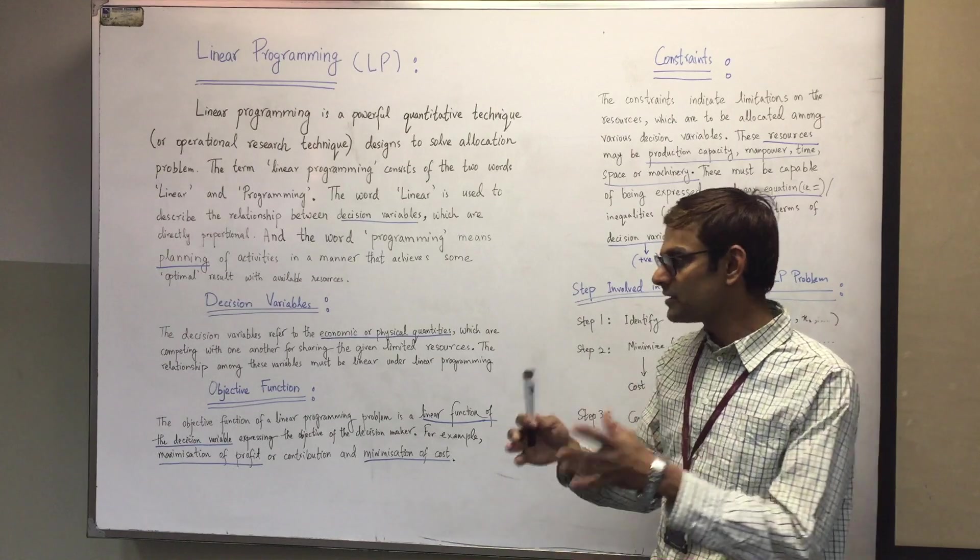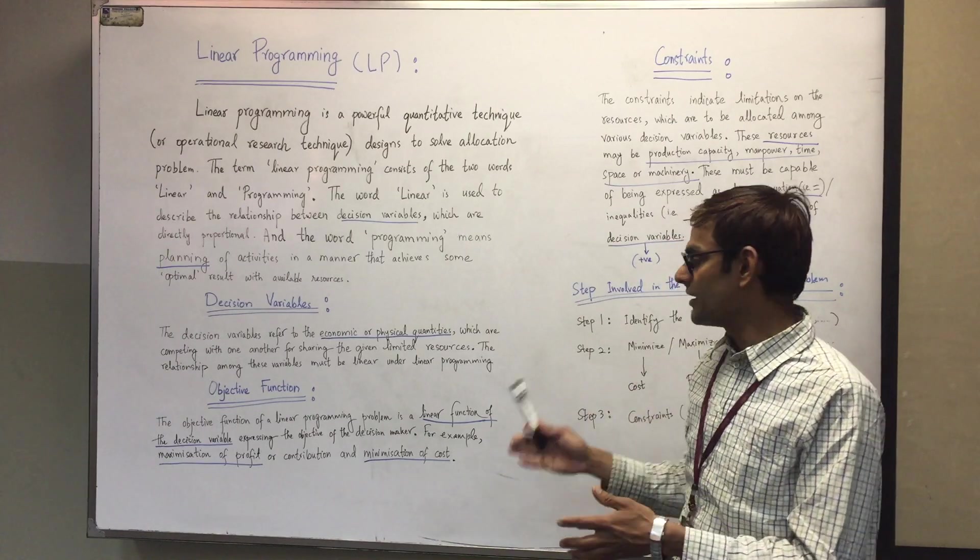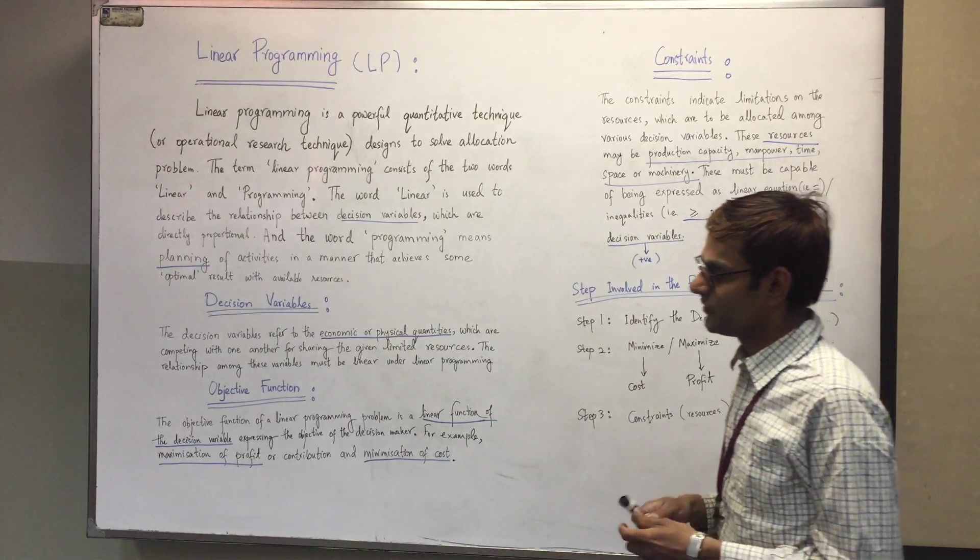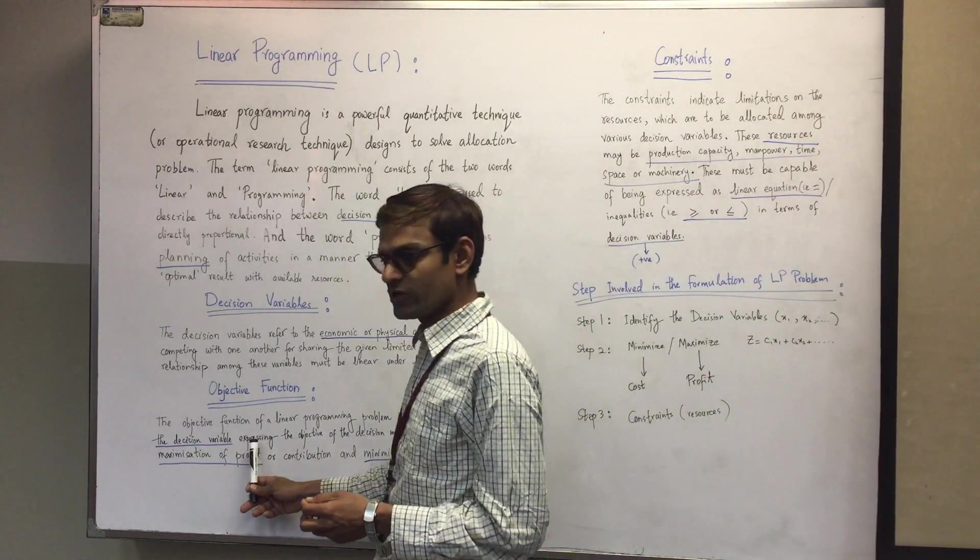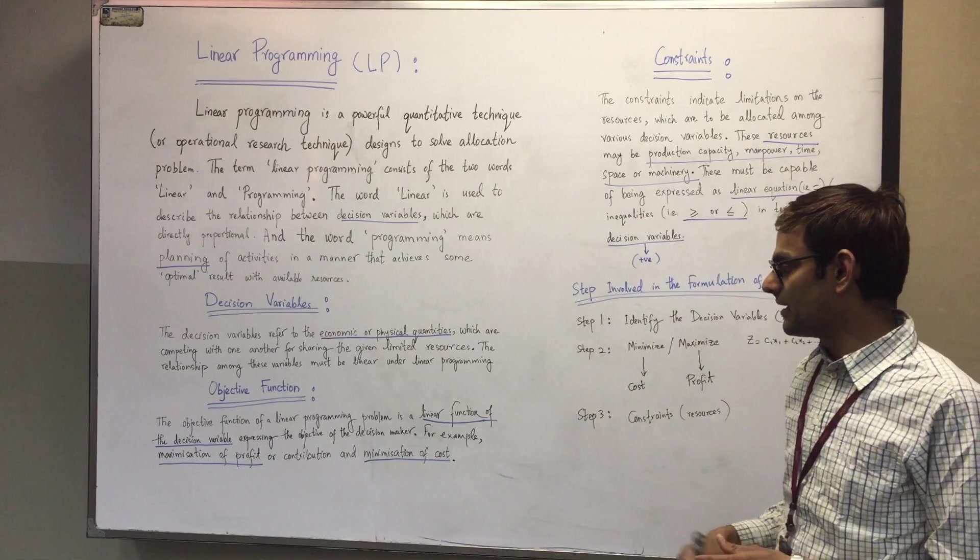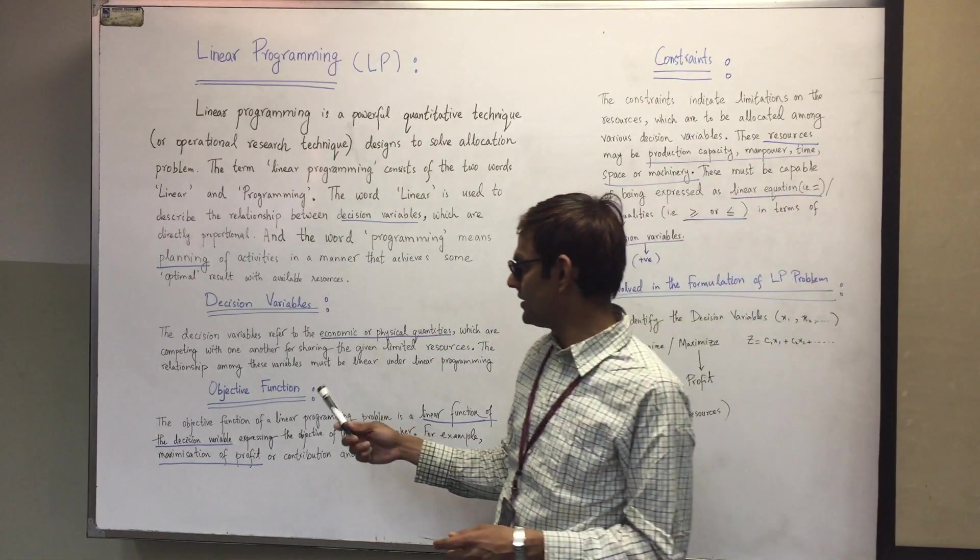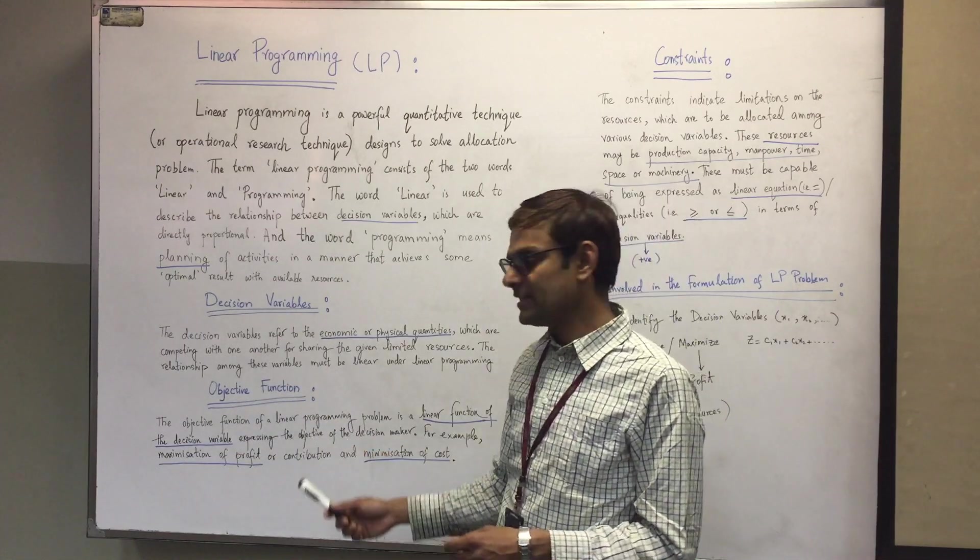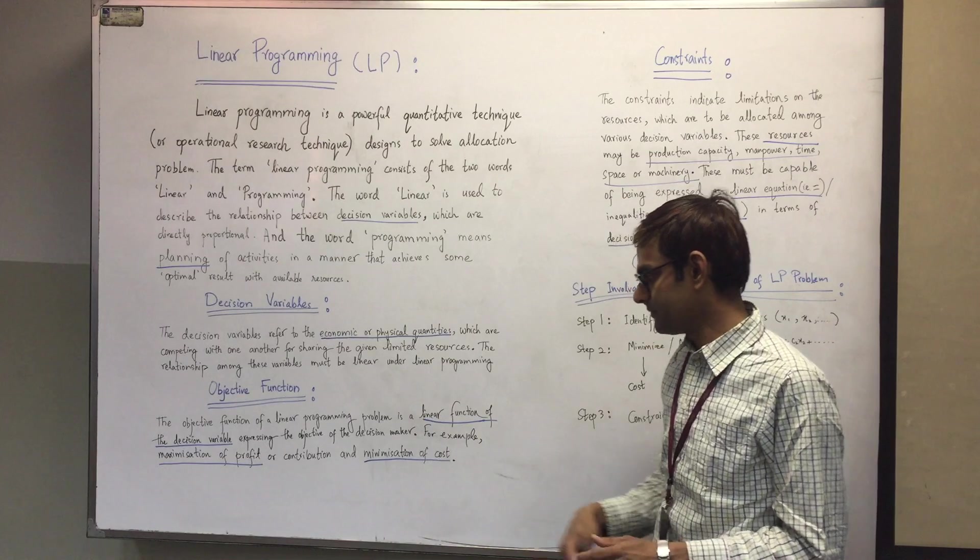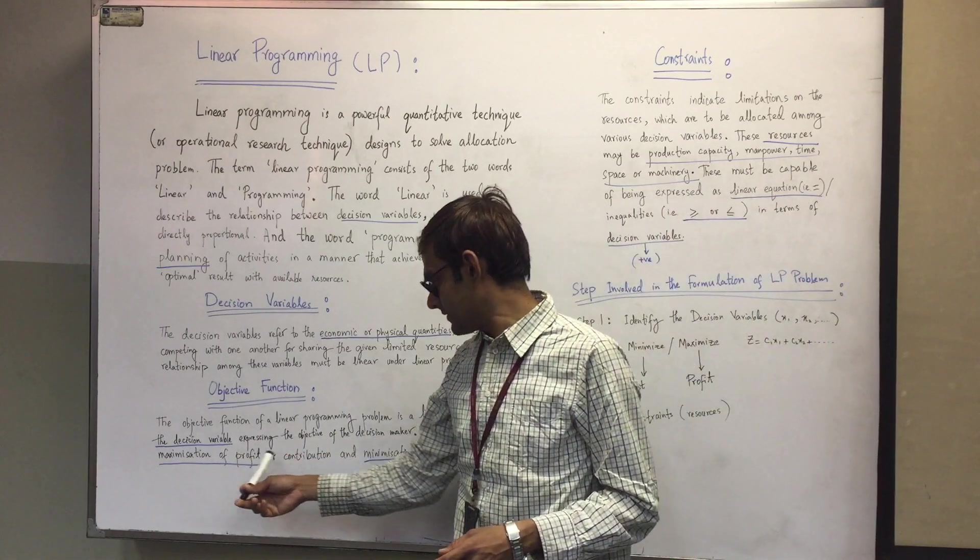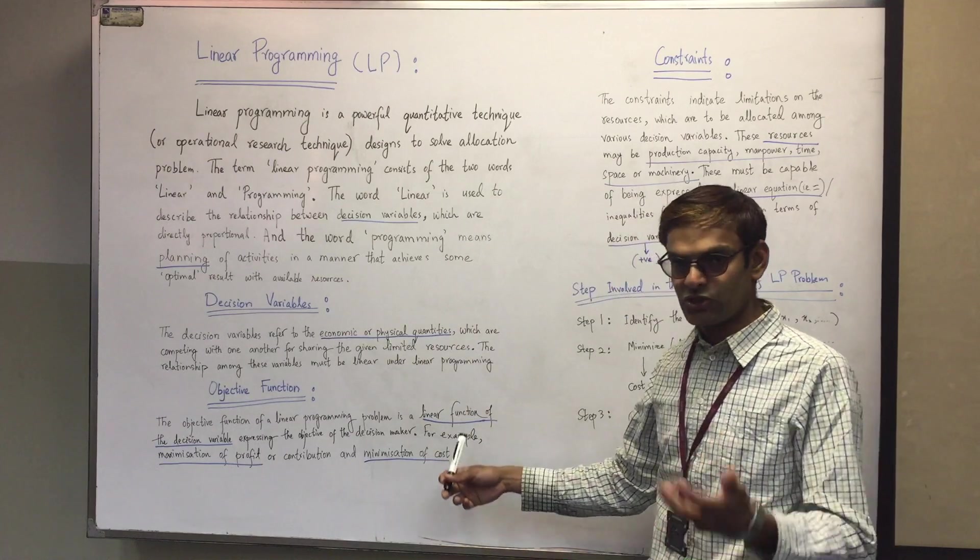The objective function of a linear programming problem is a linear function of the decision variables, expressing the objective of the decision maker. For example, minimization of cost or maximization of profit.